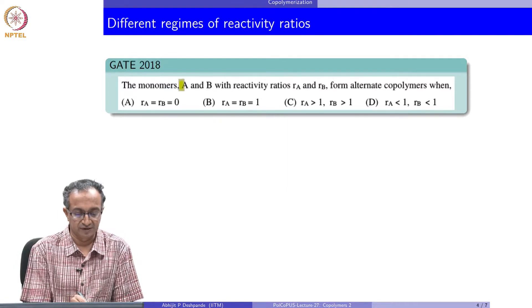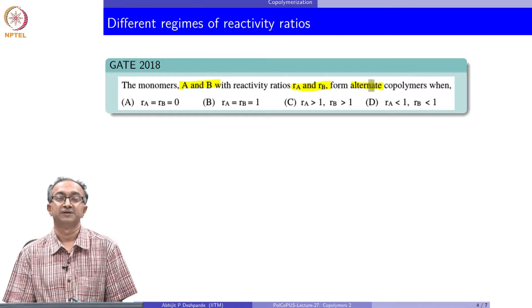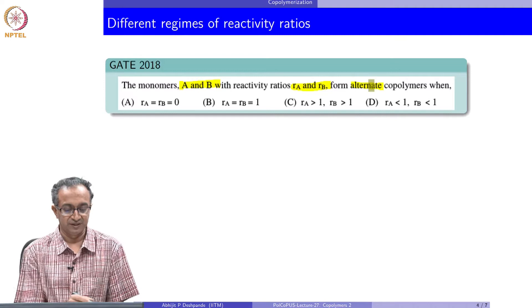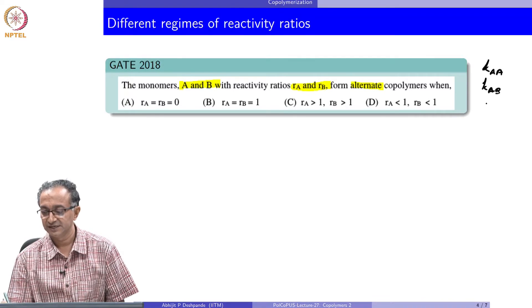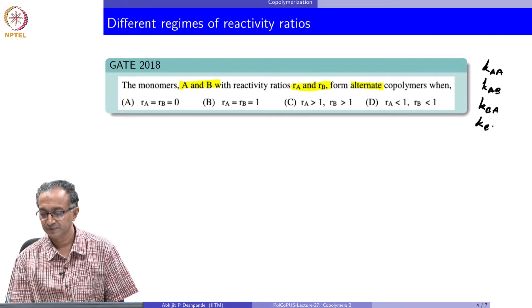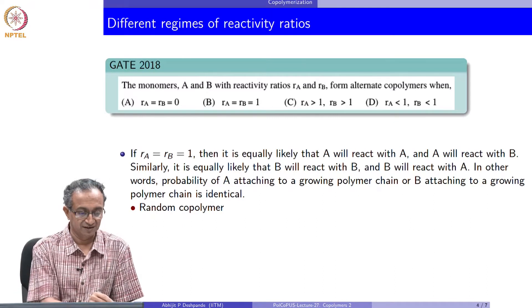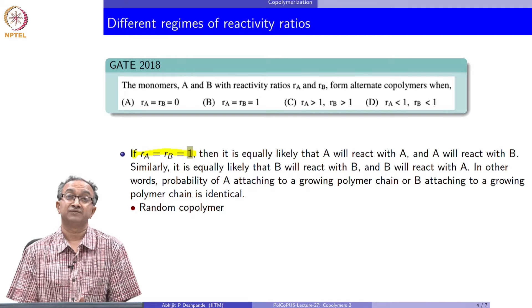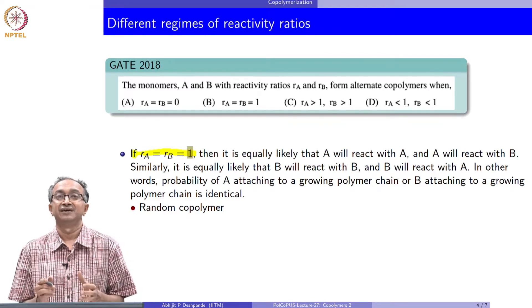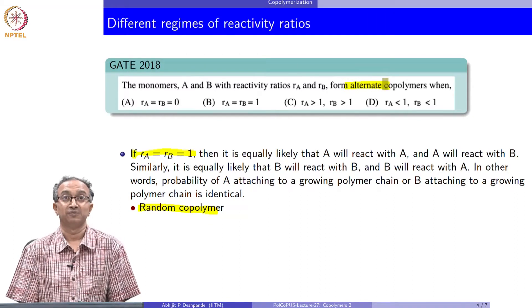In this exam question, two monomers with reactivity ratios Ra and Rb — when do they form an alternating copolymer, meaning an ABABAB kind of polymer? There are various options depending on the KAA or KAB rate constants. If Ra equals Rb equals 1, all rate constants are equivalent, so A reacting with A has the same rate as A reacting with B, and B reacting with A and B reacting with B. Therefore any species can react with any other and we get a random copolymer. But the target here is an alternating copolymer — so what should the reactivity ratios be?